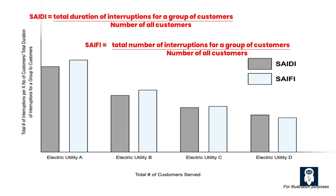SAIDI and SAIFI are two of the most common metrics for measuring power distribution reliability. SAIDI stands for System Average Interruption Duration Index, and it measures the average duration of power outages per customer over a given period. SAIFI stands for System Average Interruption Frequency Index, and it measures the average number of power outages per customer over a given period. These metrics indicate how often and how long customers experience power interruptions, and they can help power distribution companies identify the causes and locations of outages and prioritize maintenance and improvement actions.